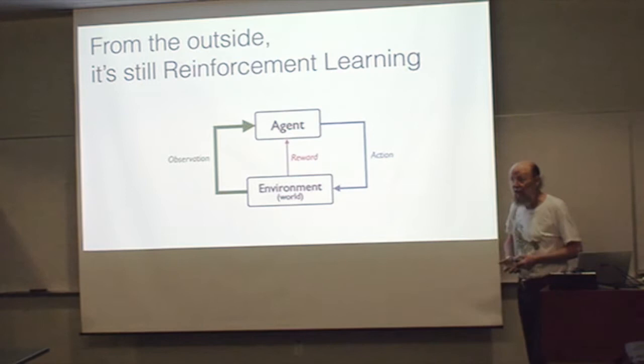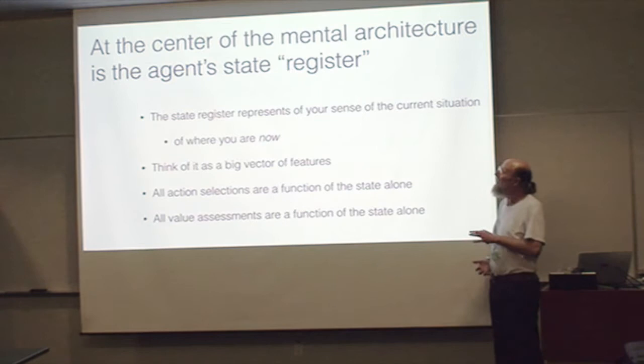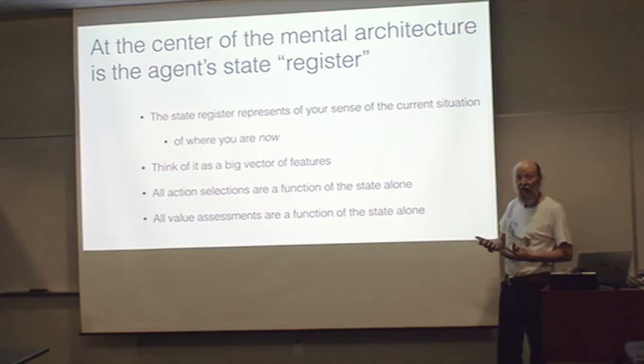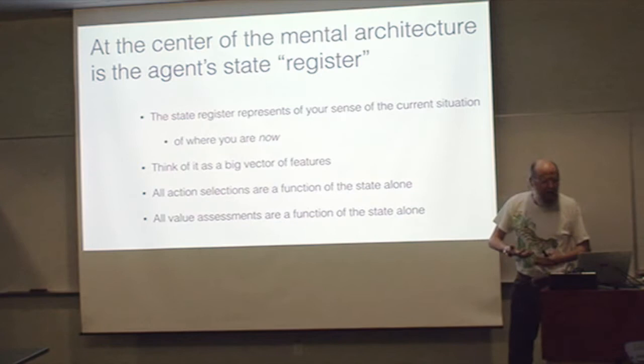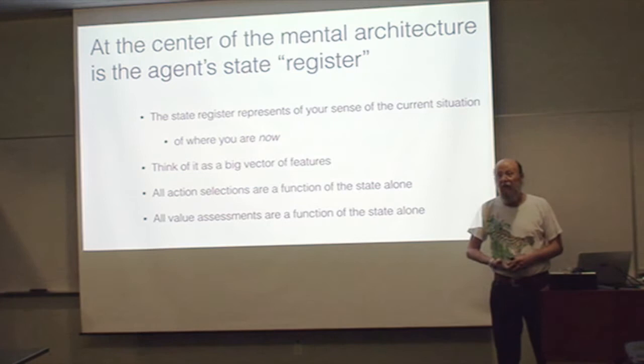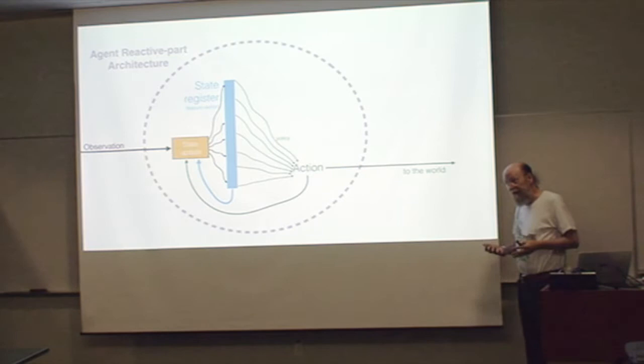At the center of the mental architecture is going to be this thing, which is the agent's representation of where it is now. We're going to call it the agent state or just the state register. It represents your sense of where you are now, what your current situation is. Think of it as a big vector of features to describe that situation. This is used to do everything - to select actions or to get your value assessment.